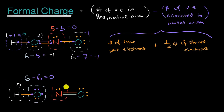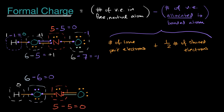Moving to the nitrogen in the second structure: free nitrogen has five valence electrons. This nitrogen has two, three, four, five valence electrons allocated to it — five minus five gives zero formal charge. And last but not least, the final oxygen: a free, neutral oxygen has six valence electrons, and this one has two, four, five, six valence electrons allocated — six minus six equals zero.